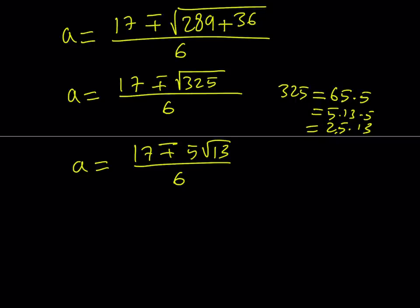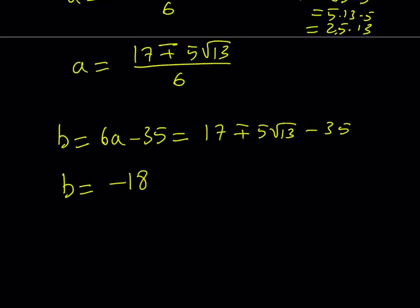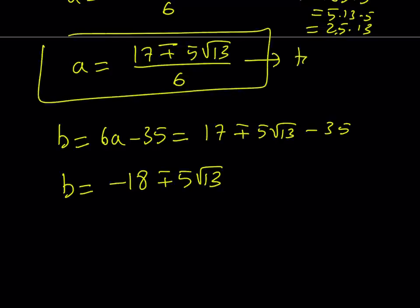Now for each value of a, we can go ahead and substitute and get the value of b from here. b is going to equal 6a minus 35. If I take the positive value, it's kind of nice because imagine you're multiplying this whole thing by 6. That's going to get rid of the denominator. And then you're going to subtract 35 from it. So the b values are going to be 17 minus 35, which is just negative 18, and that's going to be plus minus 5 root 13. So these are my a values, which is the value for tangent alpha, and this is my tangent beta value.